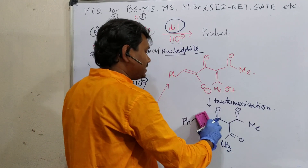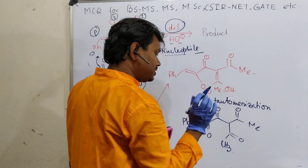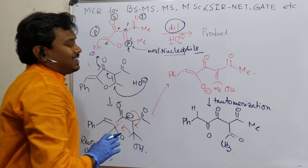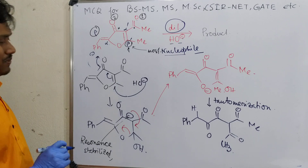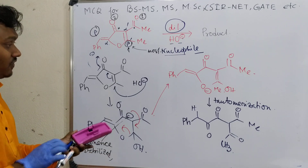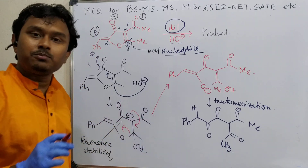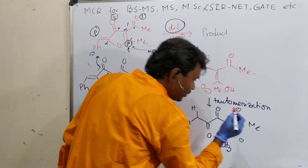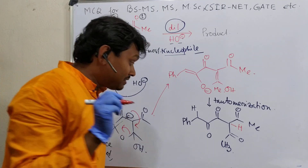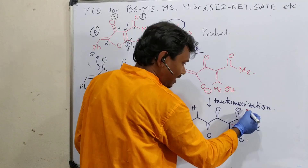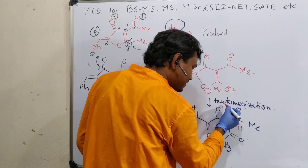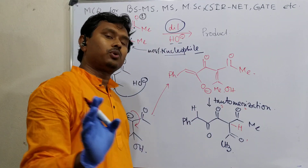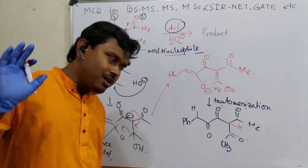In the next step, what can happen is that it can abstract a proton from the reaction medium, so the negative charge is gone. But here is an interesting point: there is one proton that is in between three carbonyls - carbonyl number one, carbonyl number two, and carbonyl number three. So it is very acidic, and under these alkaline conditions it will be deprotonated. Undoubtedly it will happen.